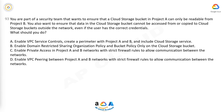A. Enable VPC service controls, create a perimeter with Project A and B, and include Cloud Storage service. B. Enable domain restricted sharing organization policy and bucket policy only on the Cloud Storage bucket. C. Enable private access in Project A and B networks with strict firewall rules to allow communication between the networks. D. Enable VPC peering between Project A and B networks with strict firewall rules to allow communication between the networks.